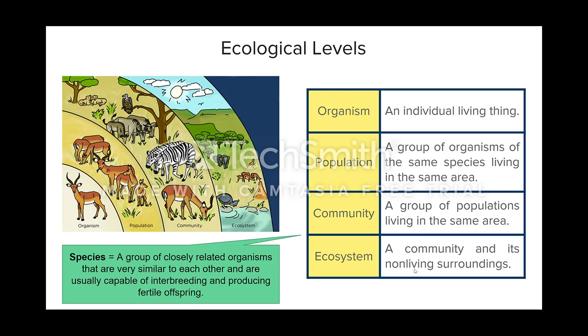That community is part of an ecosystem, and that ecosystem is the community and its non-living surroundings. It is the combination of its biotic and its abiotic factors. Please also recognize that we'll use the term species when talking about ecology. A species is that group of closely related organisms that are very similar to each other, but what defines a species is that the individuals in that group are capable of interbreeding and producing fertile offspring.